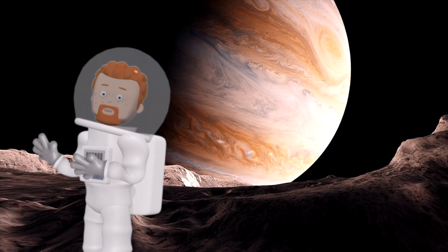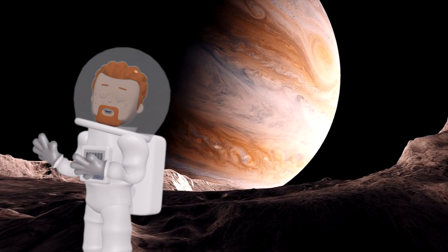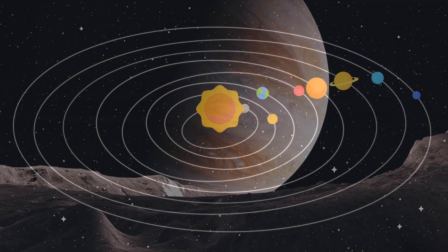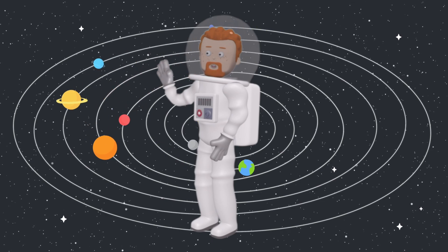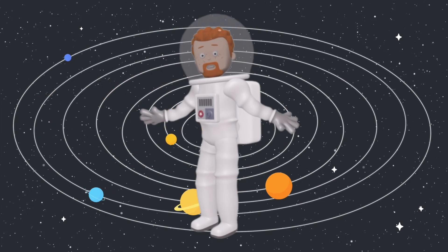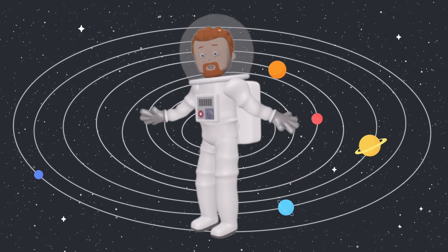Jupiter is so big that more than 1,300 Earths could fit inside it. What an amazing journey we've had today. We explored Earth, Mercury, and Jupiter and discovered so many fascinating facts about each planet.